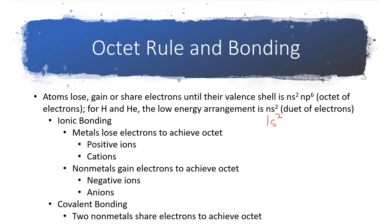If we are creating ionic bonds, the metal involved is going to lose one or more electrons to achieve its octet. That's going to create positive ions with a positive charge, and we're going to call those ions cations. If we have a nonmetal, a nonmetal will gain electrons to achieve an octet. When it gains electrons, it's going to end up with a negative charge and be a negative ion, and the special name for a negative ion is an anion.